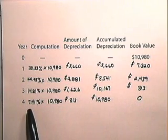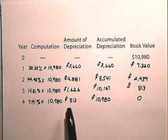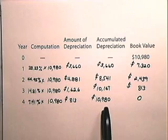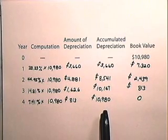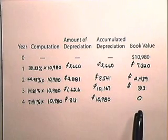The fourth year's depreciation is 7.41 percent, or $813, and our accumulated depreciation is $10,980, and our book value is zero. And let's always remember when we're doing a depreciation schedule that the book value is the original cost less the accumulated depreciation.